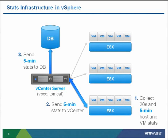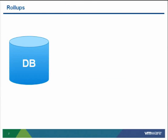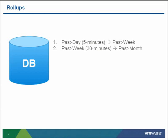The database stores this data and is responsible for periodic roll-ups. A roll-up takes five-minute stats — called past-day statistics — and rolls those up into the past week at a granularity of 30 minutes. Each six samples is converted to a single 30-minute statistic. Similarly, past week is rolled up to past month, and past month to past year. These roll-ups occur at half-hour and two-hour intervals completely independent of the vCenter server itself.